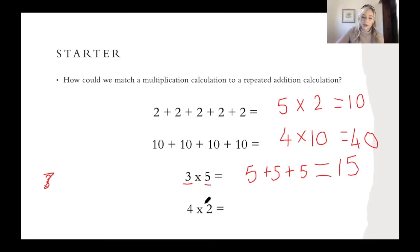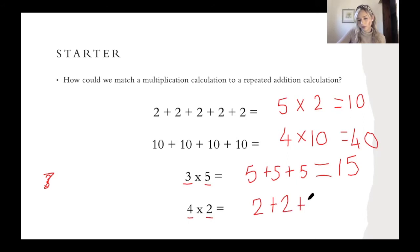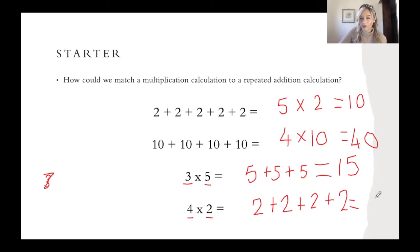Now this time let's have a look. I'm going to have four groups and in each of my groups I'm going to have two. So I need to add two four times: one, two, three, four groups of two. And if I know my two times table then I know that four times two — or two times four because they're the same — makes eight.